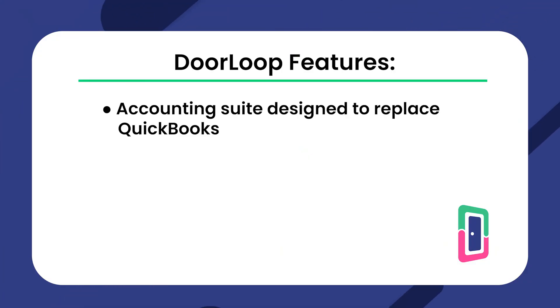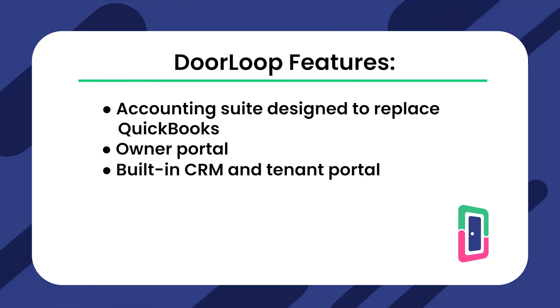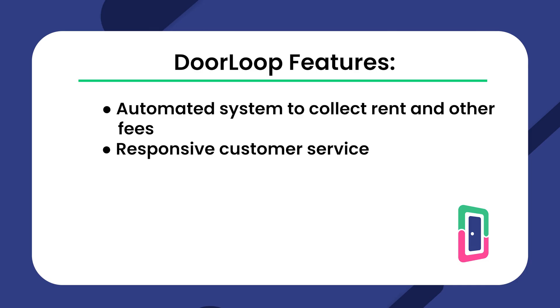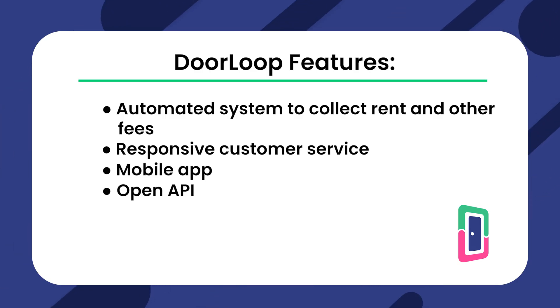Number one, we have Doorloop. Doorloop is an all-in-one residential property management software built to manage anything with a door. It helps landlords and property managers manage their properties with ease and confidence. Its dashboard was specifically designed to be intuitive and super easy to use, and its features centralize and streamline any property management business. Doorloop features include an accounting suite designed to replace QuickBooks, owner portal, built-in CRM and tenant portal, maintenance order management, advertising and marketing tools, automated system to collect rent and other fees, responsive customer service, mobile app, and open API. Doorloop's affordable pricing starts at $49 a month for up to 20 properties, making it an accessible option for landlords, property managers, and other real estate professionals of any portfolio size and type. Doorloop also offers multiple pricing tiers based on your needs.